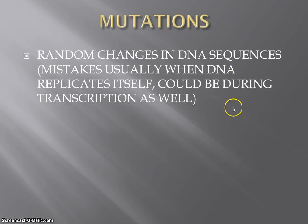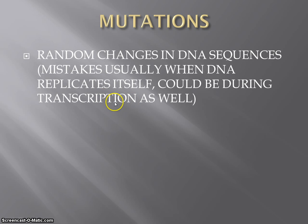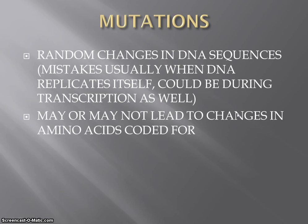Mutations are essentially random changes in DNA sequences — not overseen by anyone, not deliberately changing a thymine into a cytosine. Totally random. Usually these mistakes happen when DNA replicates itself — think of trying to copy down a sentence and mistakenly misspelling a word. It could also occur during transcription when copying a gene onto mRNA. We'll focus primarily on mutations in DNA because those have long-term effects. It may or may not lead to changes in the amino acids ultimately coded for.